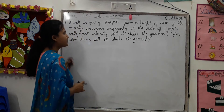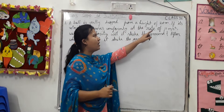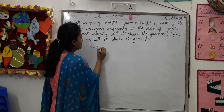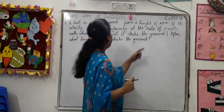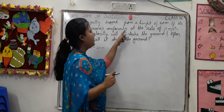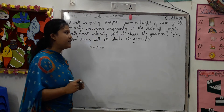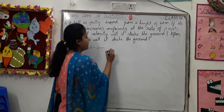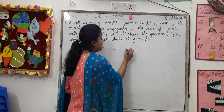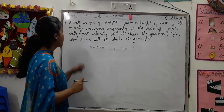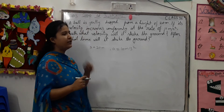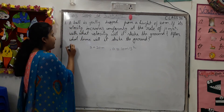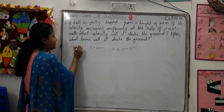In this question, the height of the ball from the ground is given as 20 meters. So distance S is equal to 20 meters. The velocity increases uniformly — as we know, the rate of change of velocity is known as acceleration. So acceleration a is equal to 10 meters per second squared. Since we drop the ball from a height, the initial velocity u is equal to 0.